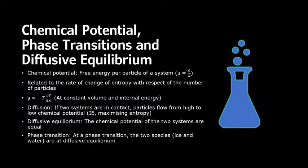Finally, chemical potential is defined as the free energy per particle of a system and describes the ability of a system's particles to move across a boundary, in this case across a phase boundary. This quantity is defined as minus the rate of change of entropy with respect to the number of particles at constant volume and internal energy, times temperature.